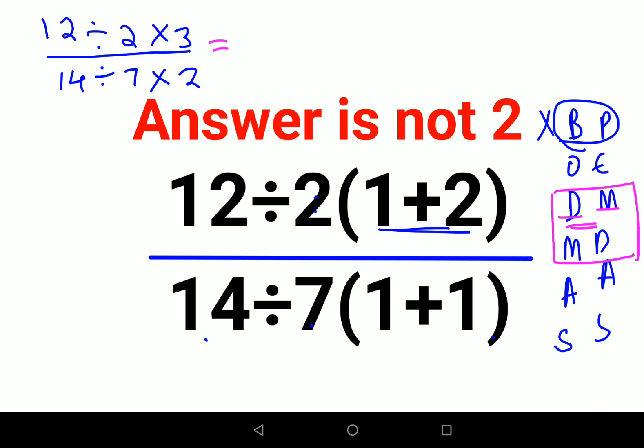Now, you might be wondering what happens in this kind of a scenario where there is division and then there is only multiplication. So in that case, what should I do as my first operation?